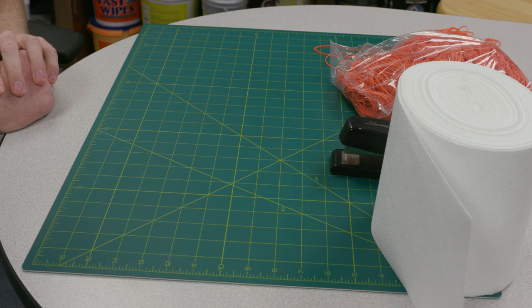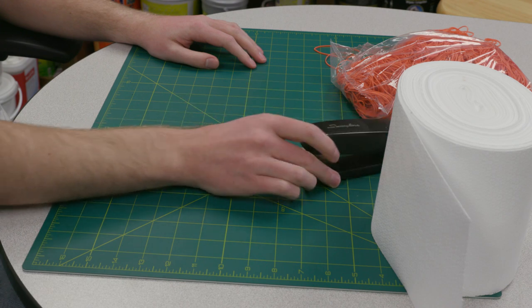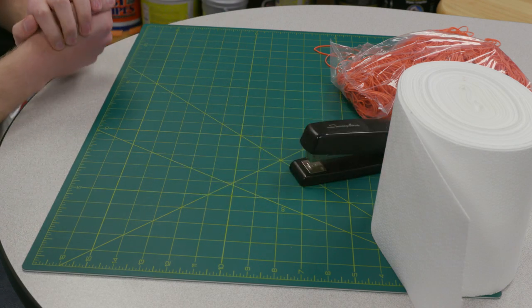This is how to make a stapled mask. The first thing that you need to do is sanitize your work area, sanitize your stapler, and wash your hands with hot soapy water for at least 20 seconds.